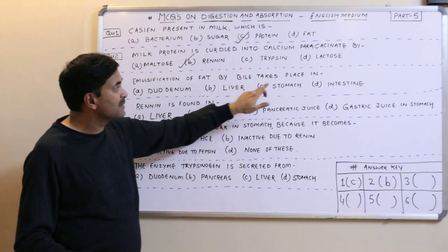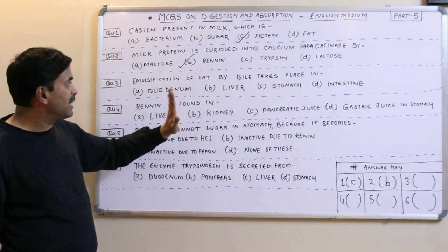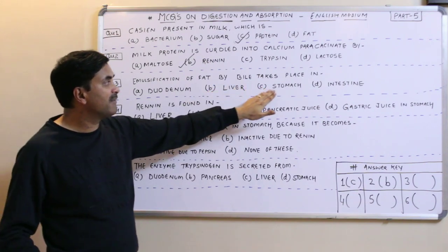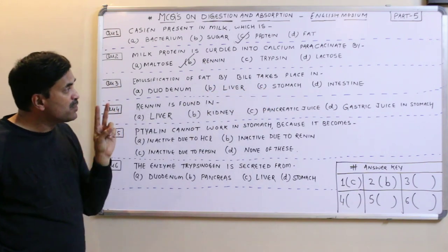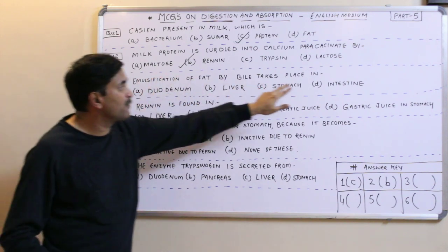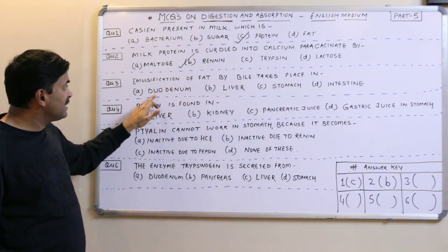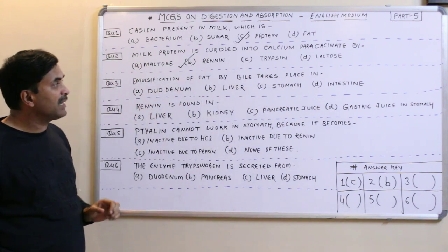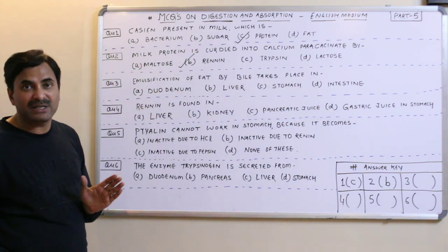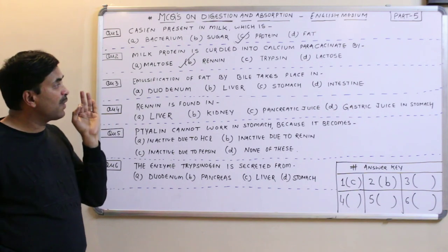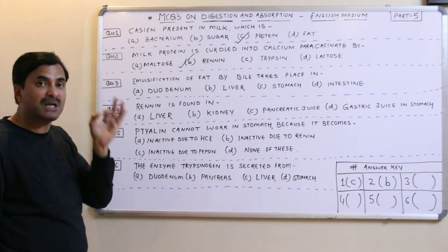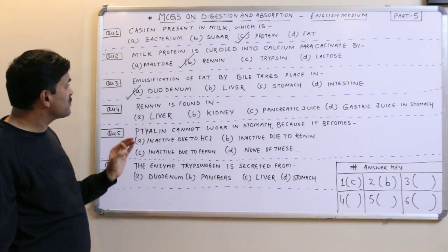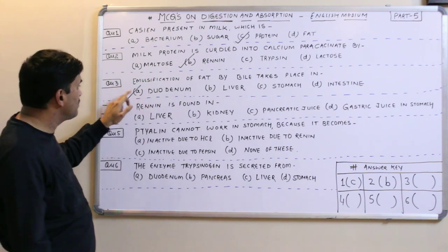The options are: duodenum, liver, stomach, or intestine. Emulsification never occurs in the liver or stomach. The confusion is between option A (duodenum) and option D (intestine). Emulsification does not occur throughout the entire intestine — it strictly occurs in the duodenum. So the best answer for question three is A: duodenum.